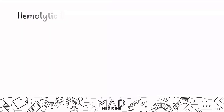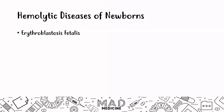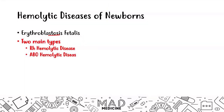Now let's talk about the hemolytic diseases of the newborns, also known as erythroblastosis fetalis — which makes sense because the erythrocytes are essentially blowing up in the fetus. There are two main types: the RH hemolytic disease and the ABO hemolytic disease, corresponding to the two main blood group classifications. One very high-yield point is that the RH hemolytic disease is more dangerous than the ABO hemolytic disease.